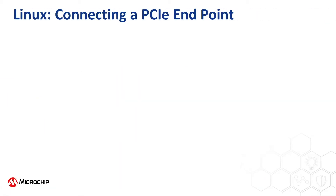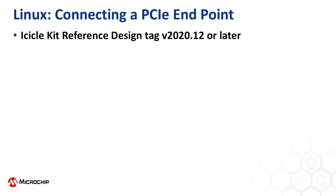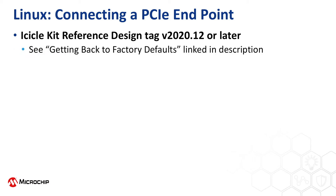To complete the steps shown in this playlist, you'll need the Icicle Kit reference design tag version 2020.12 or later, programmed into your kit. If you're not sure how to update to this version of the design, watch our video called Getting Back to Factory Defaults.